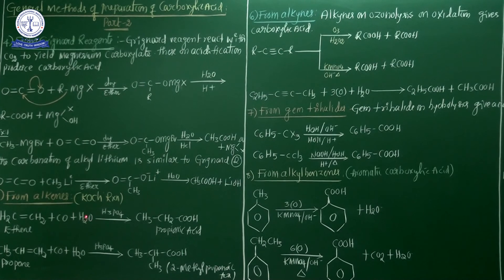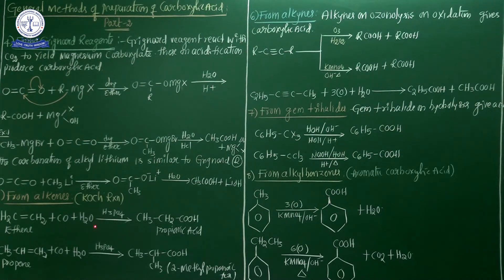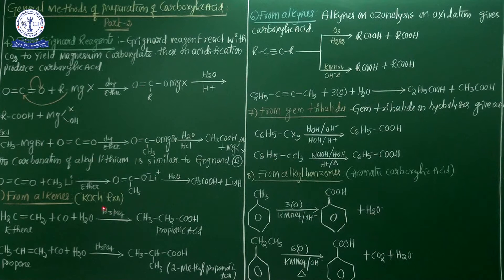The sixth preparation method of carboxylic acid is from alkenes — this is generally called carbonylization of alkenes or the Koch reaction. It is a very familiar reaction. When a mixture of alkenes, carbon monoxide, and steam is heated under pressure at approximately 573 K to 673 K in the presence of phosphoric acid (H₃PO₄) as catalyst, monocarboxylic acid is formed. This is commonly known as the Koch reaction.